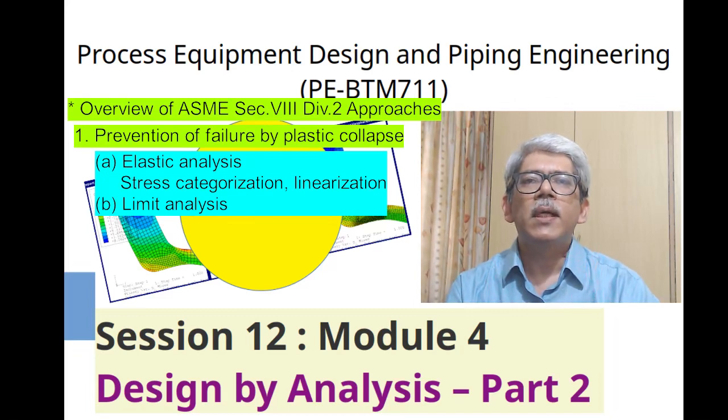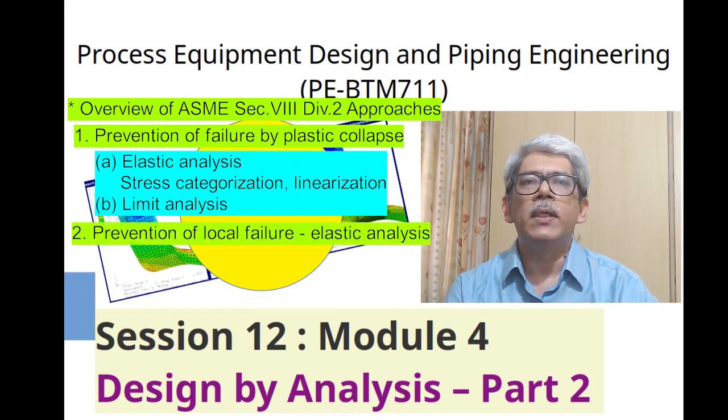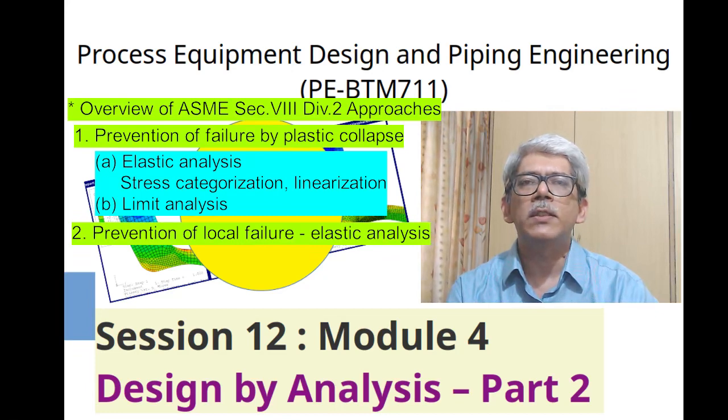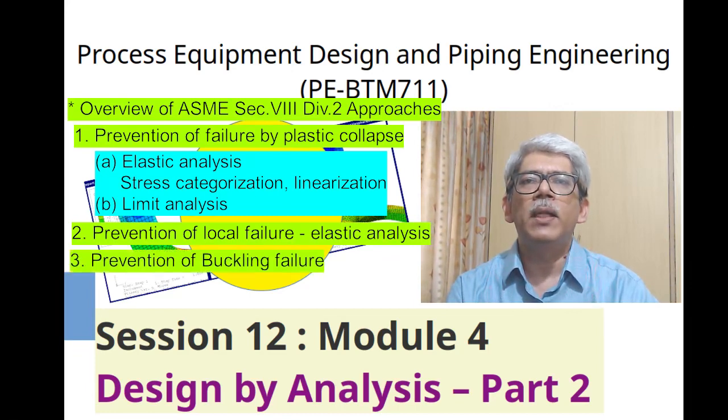The check against prevention of local failure using elastic analysis approach was covered next. In this check, the focus is on preventing failure from a local spot in the equipment, in contrast with the total cross section failure which was checked in the previous plastic collapse case.